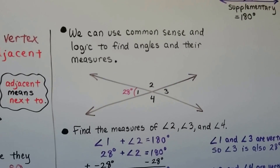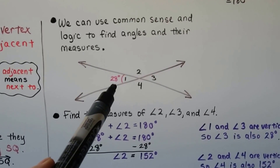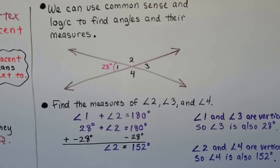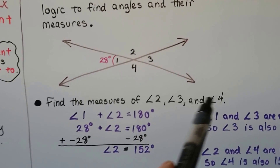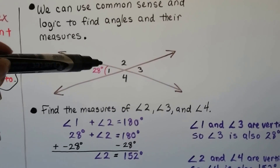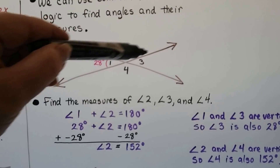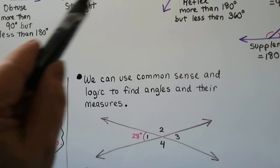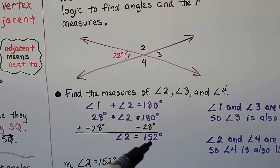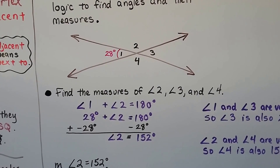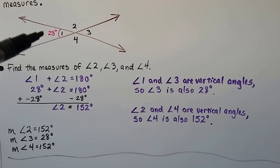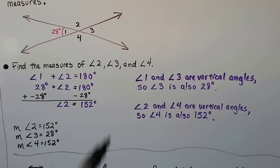We can use common sense and logic to find angles and their measures. Here we have a diagram with some vertical angles. It's telling us that angle one is 28 degrees and we need to find the measures of angles two, three, and four. We know that angle one plus angle two should total 180 degrees — a straight angle. So we take 28 degrees away from 180 and know that angle two has to be 152 degrees. We can find angle three because angle one and angle three are vertical angles, so if angle one is 28 degrees, angle three is also 28 degrees.